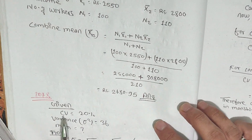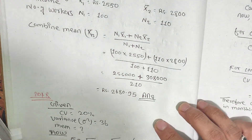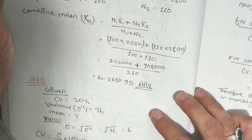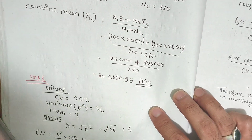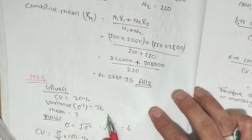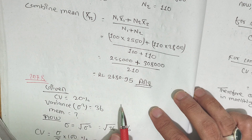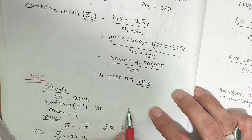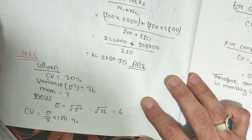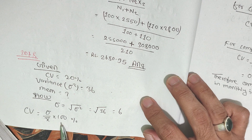We are given CV, variance, and we need to find the mean. From the CV formula: CV equals sigma divided by x-bar, multiplied by 100 percent. We need to convert variance to standard deviation.